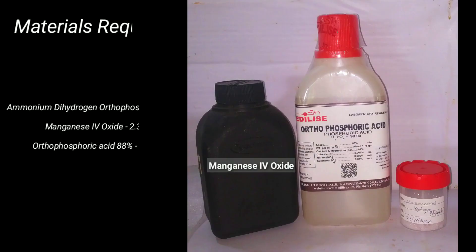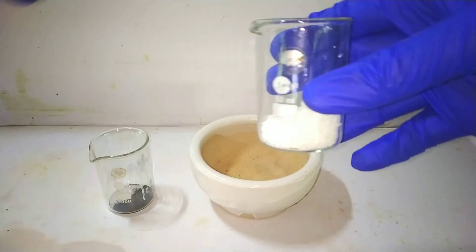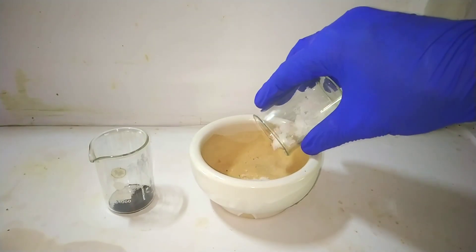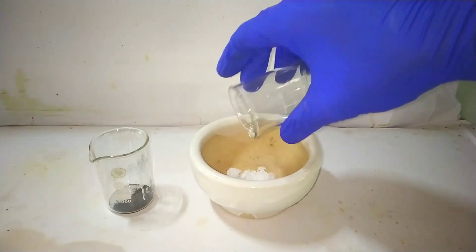Materials required for this preparation include 9.3 grams of ammonium dihydrogen orthophosphate, 2.3 grams of manganese dioxide, and 10 milliliters of 88% orthophosphoric acid.